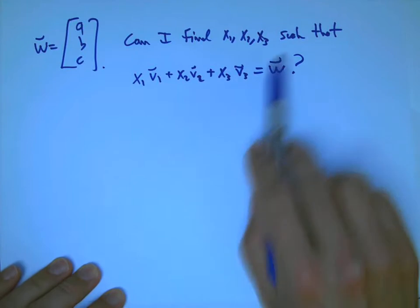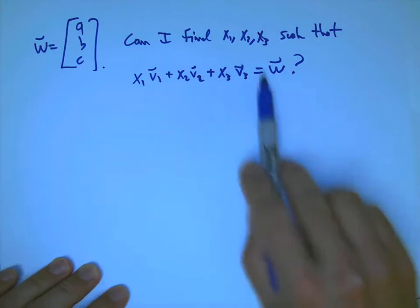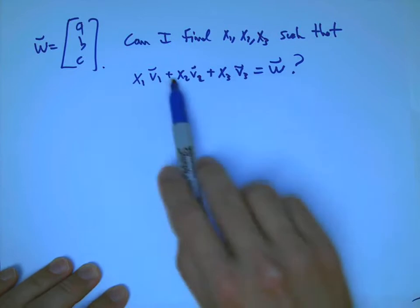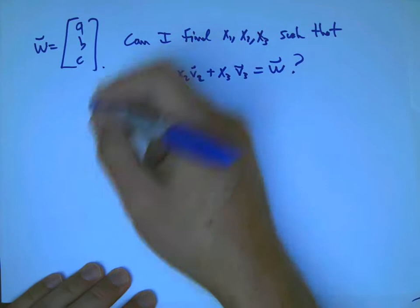So notice it's a little bit similar to the independence question. There we put a zero here, and we want to find anything non-zero to solve. Here we put something interesting, a non-zero vector, and we want to find something that solves the inhomogeneous equation.